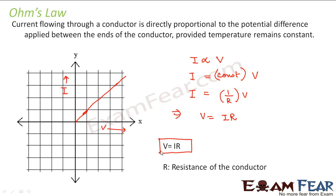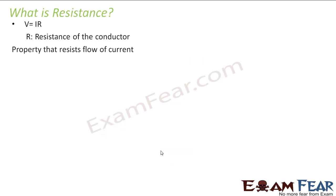So resistance was a new property which was introduced from here. So what is resistance? As the name suggests, it resists the flow of current — it opposes the flow of current.